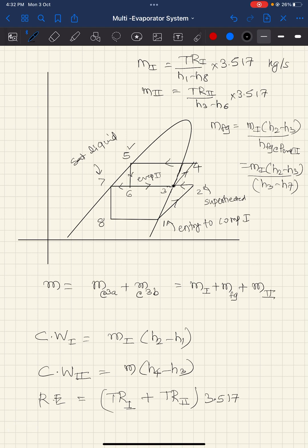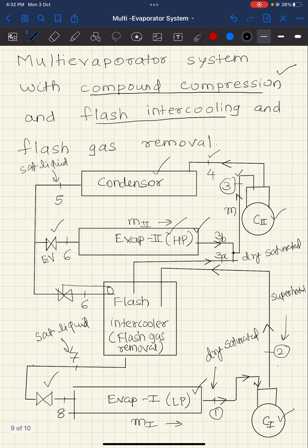This is an explanation for a very interesting case — a two-evaporator system. It is not only a two-evaporator system but also a two-compressor system. The compressors are used for compound compression with a flash intercooler, and the flash intercooler not only intercools but also removes the flash gases.